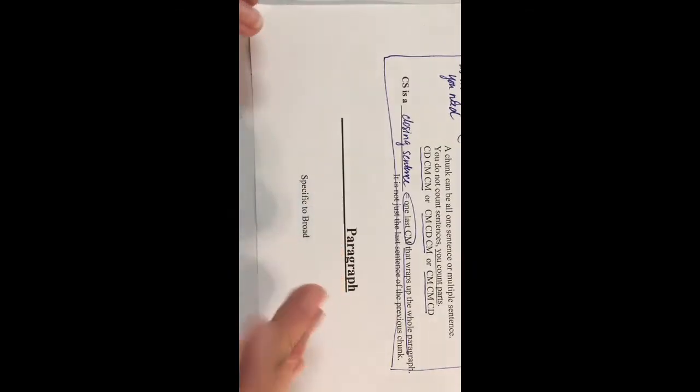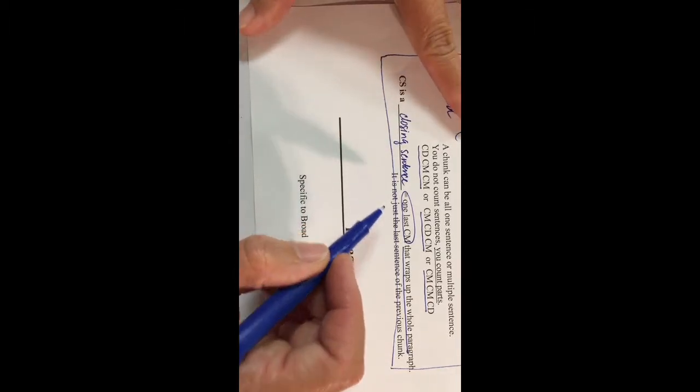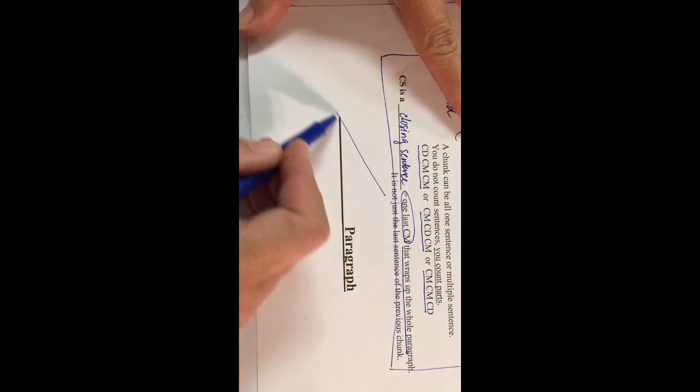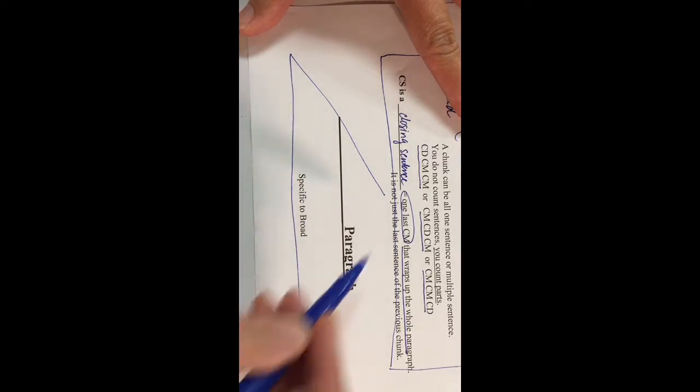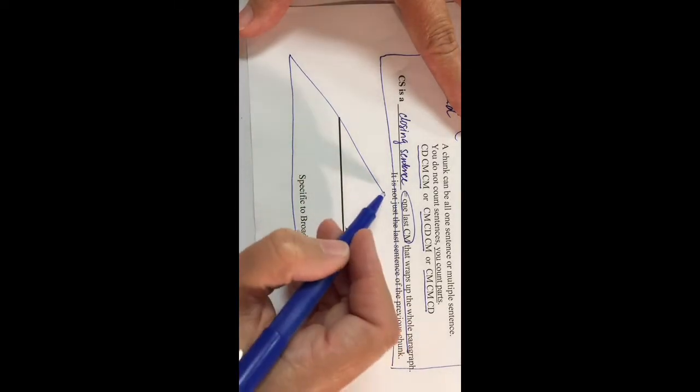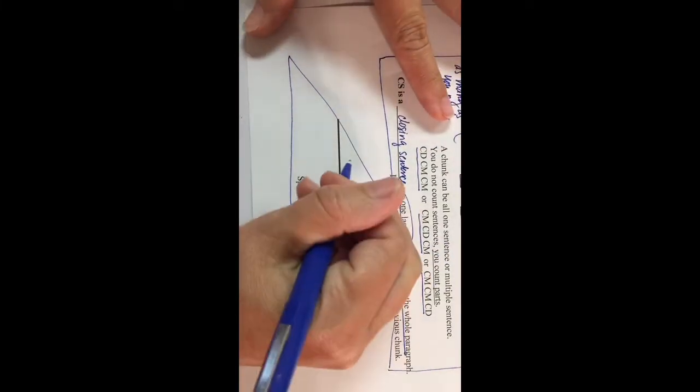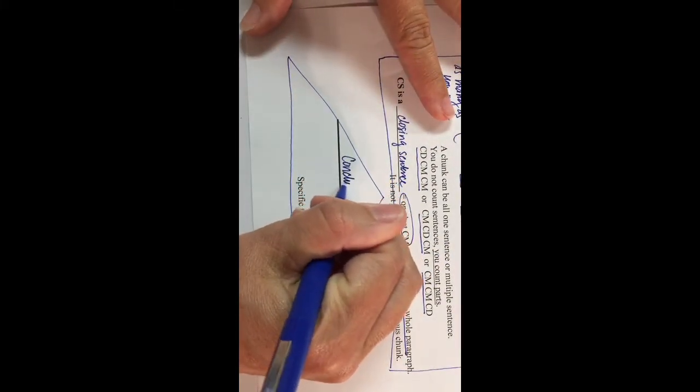Moving on to the last paragraph of a formal essay—the conclusion paragraph. It's shaped like this. It starts with kind of a restated main thought and then it goes broad. This is the conclusion paragraph, and it goes from specific to broad.